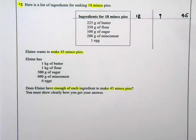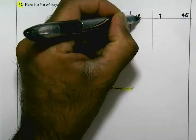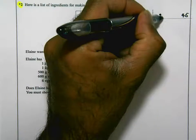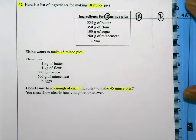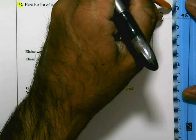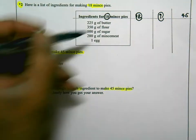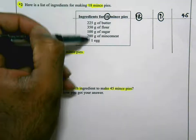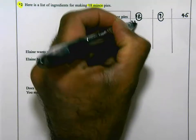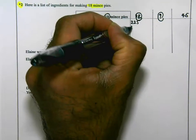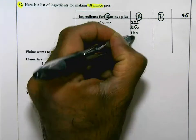18, so this 18 here, another 18, and 9. 18 adding 18 is 36, 36 plus 9 is 45. Now, if I work with the ingredients I need for each, so for 18 mince pies, these are how many ingredients I need. For 18 mince pies, I need 225, 350, 100, 280, and 1 egg.